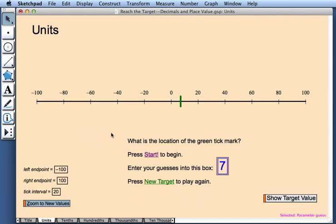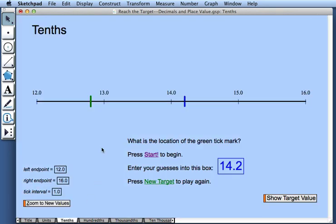Okay, so this particular number line deals with units. I can move on to a number line where the location of the green tick mark is exact to tenths. And it works just like the previous number line did.